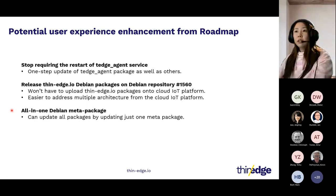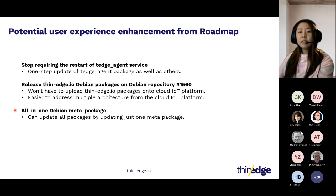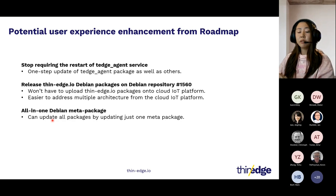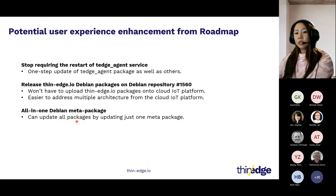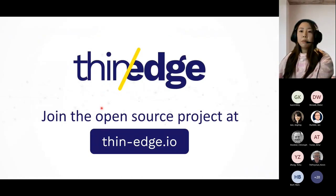The third enhancement is an all-in-one meta package. We have eight packages as of now, and when you need to update them you must list each package explicitly. An all-in-one meta package will reduce the steps required to update Thin Edge. In summary, we are still working on enhancing the usability of Thin Edge self-update. Track our work on the CSA GitHub repository. That's all for my presentation — thank you for listening.